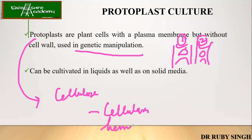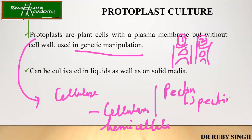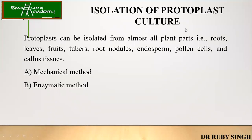We also use hemicellulases. If there is a presence of pectin in the cell wall, then we use pectinase. Protoplasts can be cultivated in liquid as well as solid media — both kinds can be used. Protoplasts can be isolated from any part of the plant: roots, shoot, leaves, fruits, tuber, endosperm, pollen cells — anything.